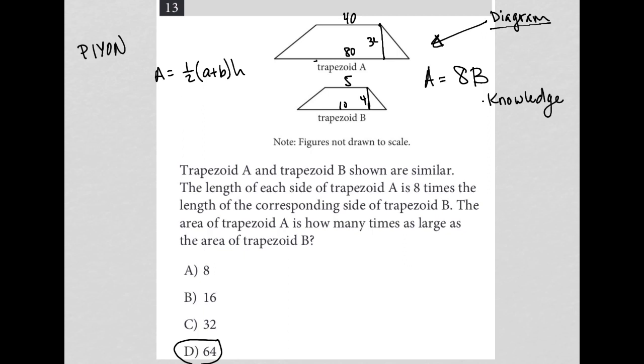So that tells me that the area for trapezoid b, so a, and I'll say little b for trapezoid b, would be one half five plus 10 times four, which is 15. Half of 15 is 7.5 times four, which is 30. So there's my area is 30. But the area for trapezoid a would be one half 40 plus 80 times 32.